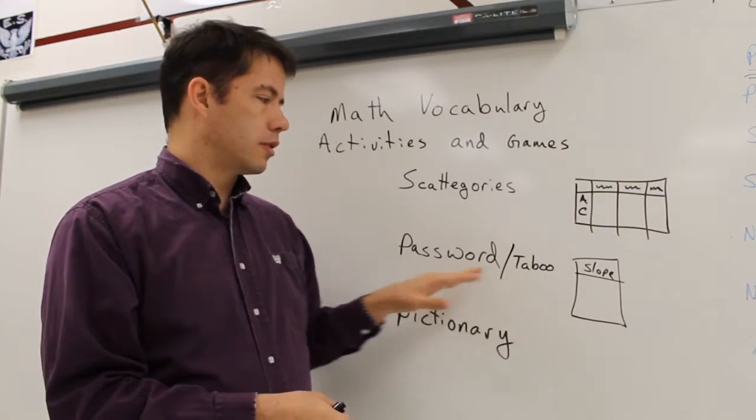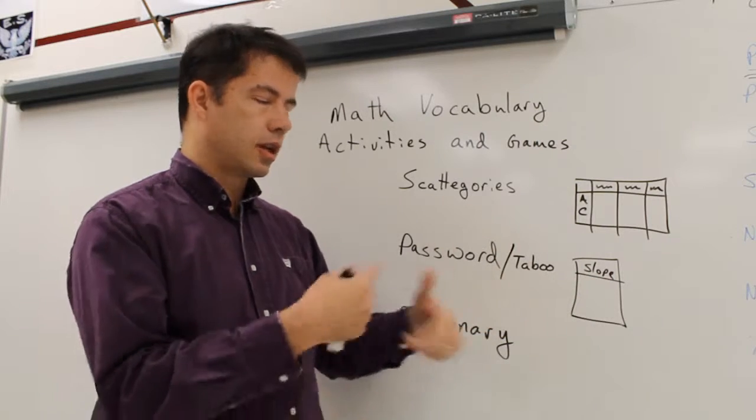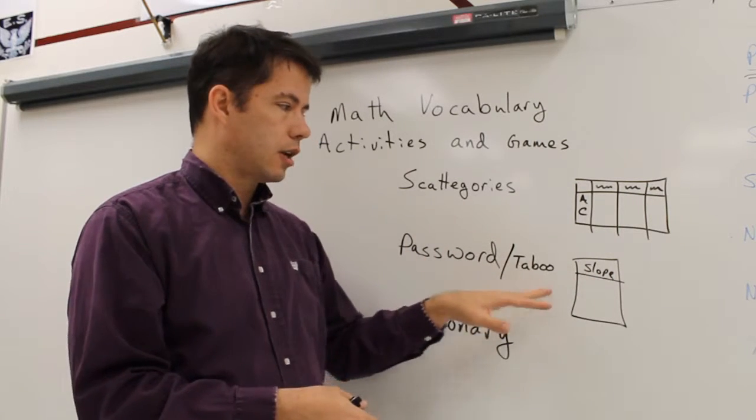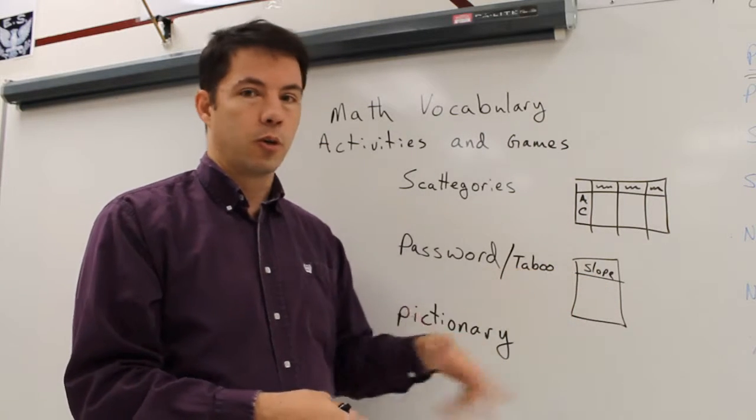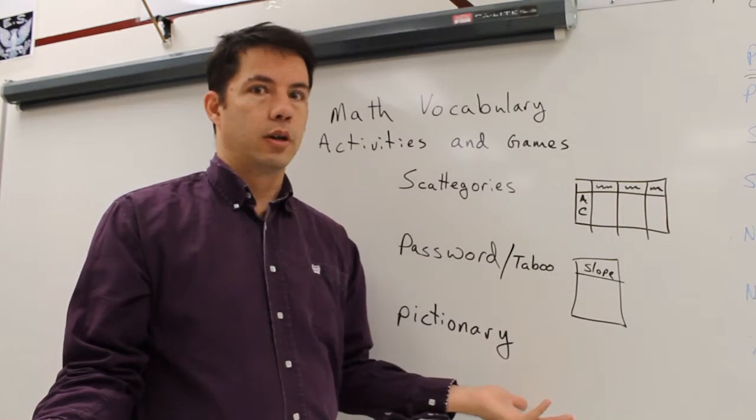Password is just guessing, saying a phrase and describing the word. Taboo is where you're going to see words that you're not allowed to say. So for slope, students might say rise over run because that's the definition, even though they don't know what rise over run means.